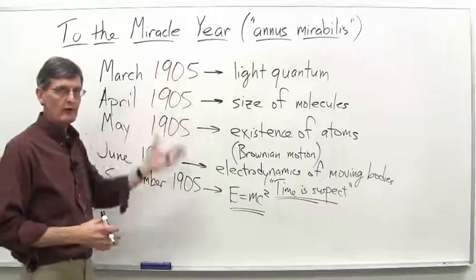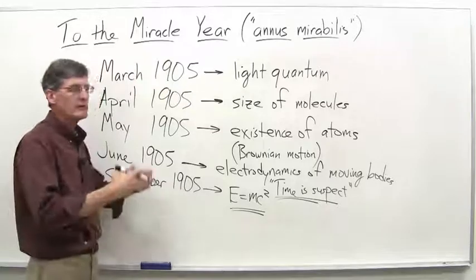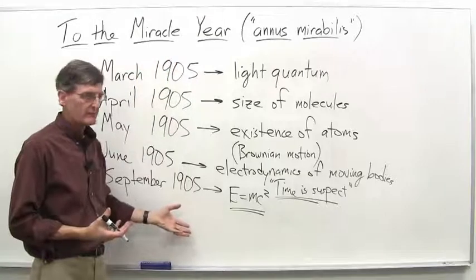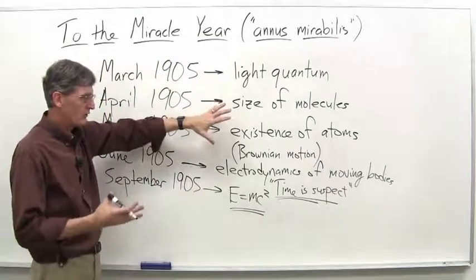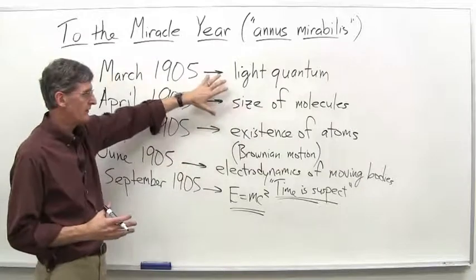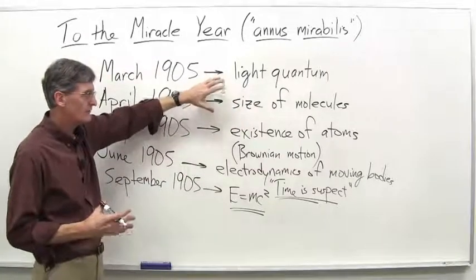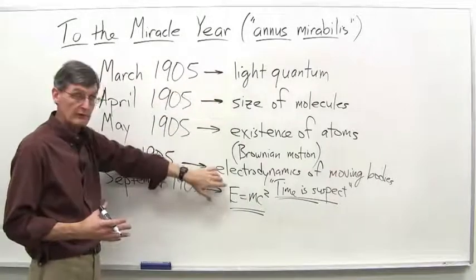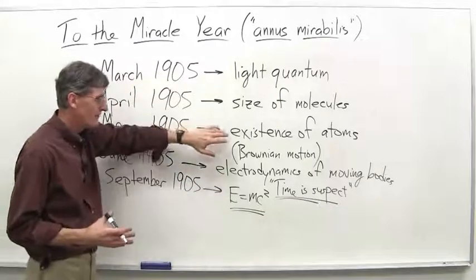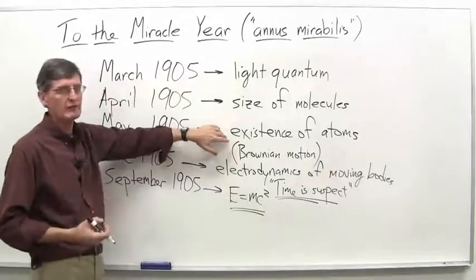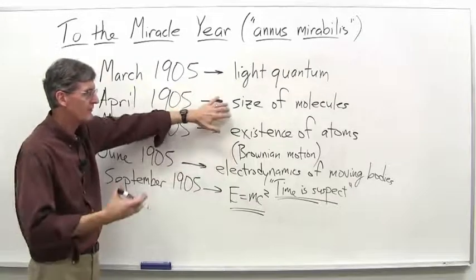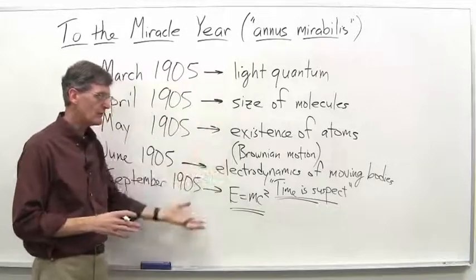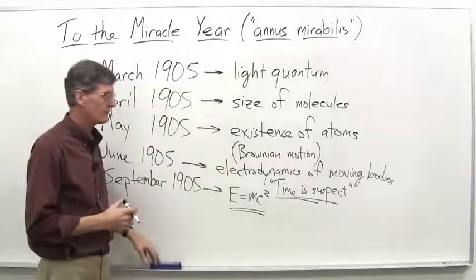This unknown, 26-year-old patent clerk, seemingly out of nowhere, comes up and publishes five papers. Any one of which could have made his career, certainly, in the physics world. And yet, in the real sense, certainly the light quantum paper, the special relativity paper, the E equals mc squared paper, the existence of atoms paper. These had profound implications for how we understand physical reality. And even the size of molecules paper. Certainly, as I mentioned, most cited paper of all of these. And it's one of the most cited papers of its time. So, an astounding year.